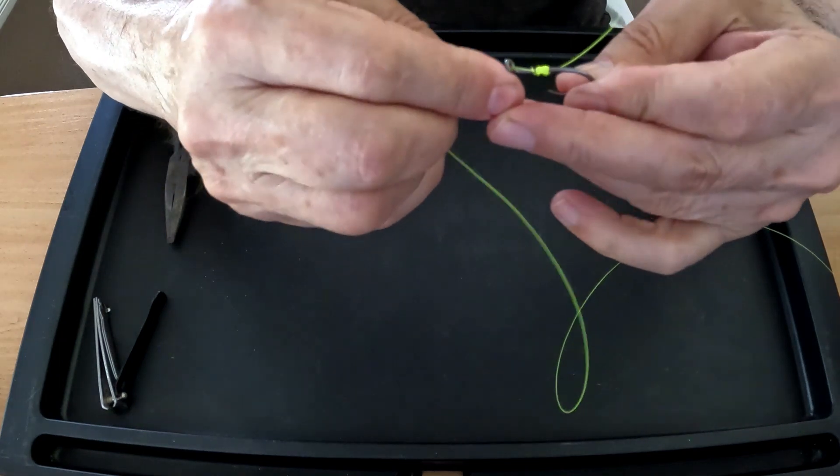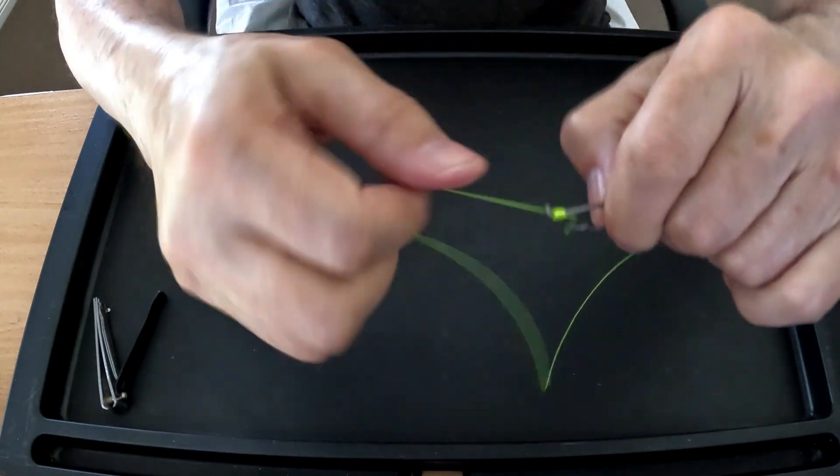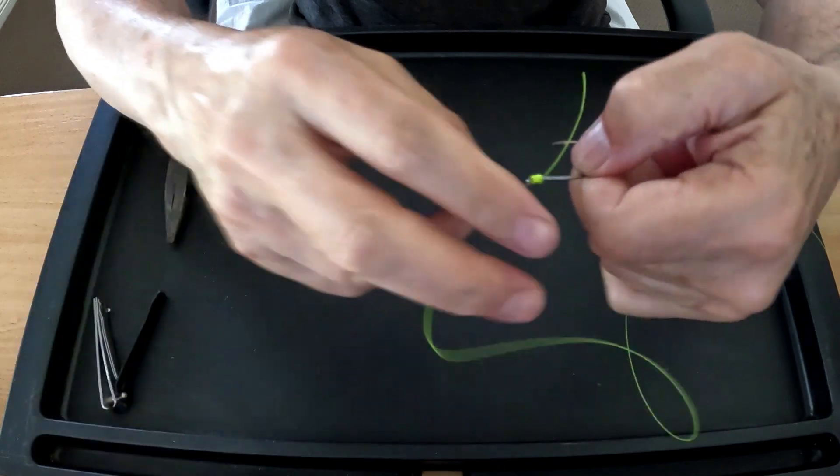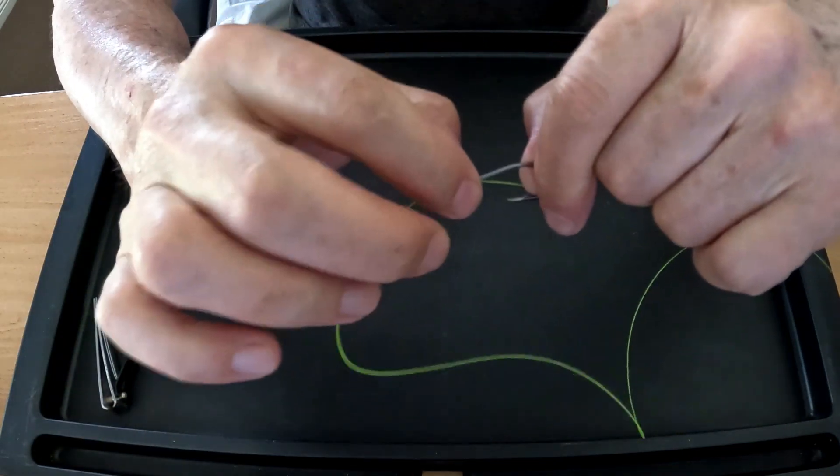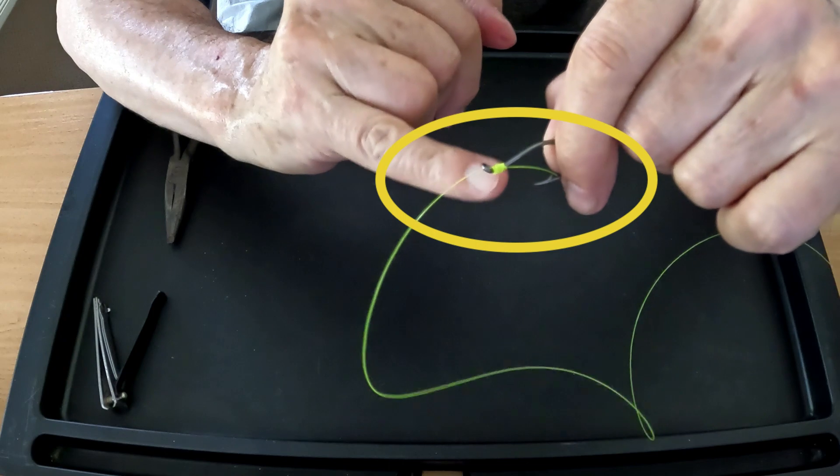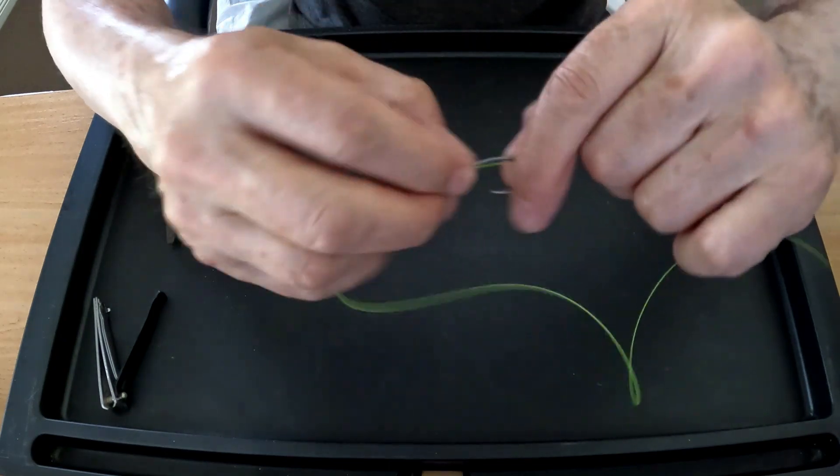Once you've done that, you can see, you can pull it towards the eye of the hook. And the great thing about it is it bunches up against the eye. It creates a very strong hold.